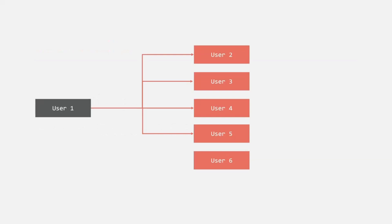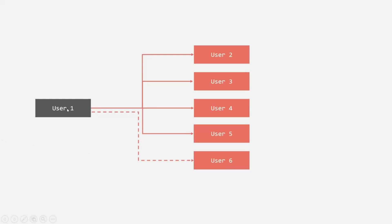The chat will always be between two users. In this example, let's say there is already a chat started between user1 and user2. In the same way, user1 has also started a chat with user3, user4, and user5. Now user1 wants to start a chat with user6. In that case, we are going to send a request from the client to create a new chat, and for that chat there will be two members: user1 and user6.